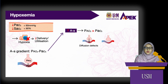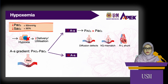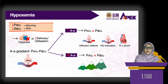Increase in A-a gradient may also occur in V/Q mismatch or in right-to-left shunt. In some cases of hypoxemia, the A-a gradient can be normal — the alveolar pressure of oxygen equilibrates with the arterial pressure. This can occur at high altitude, where the barometric pressure is decreased, which decreases the pressure of oxygen in inspired air and in the alveolar air.